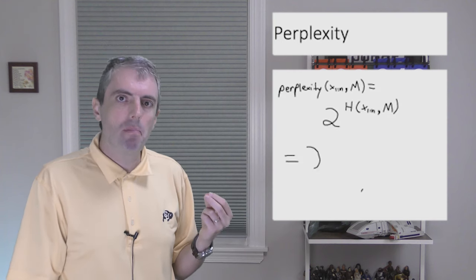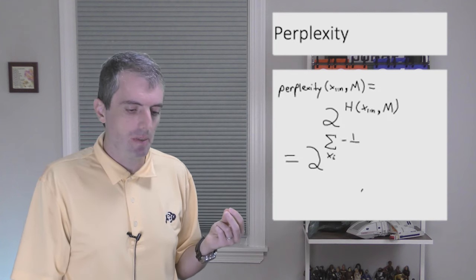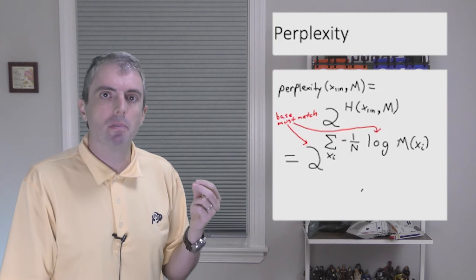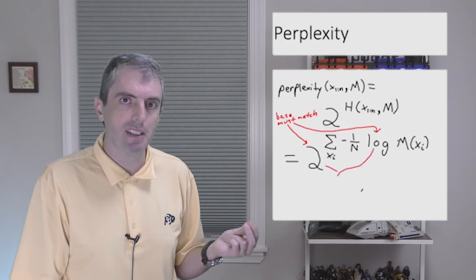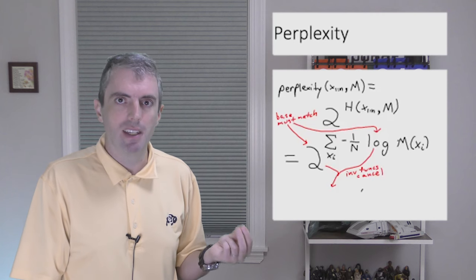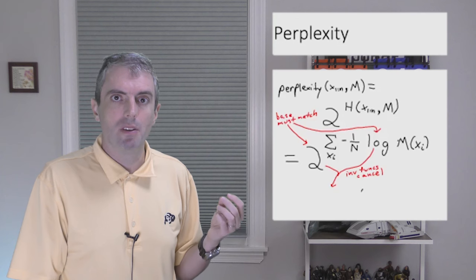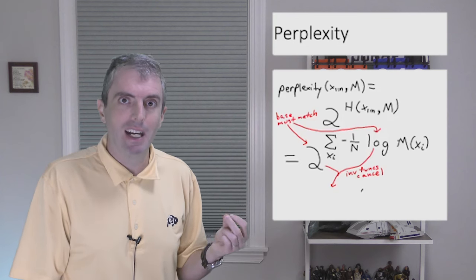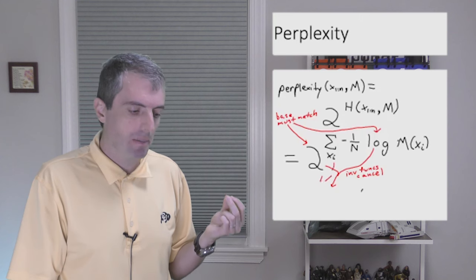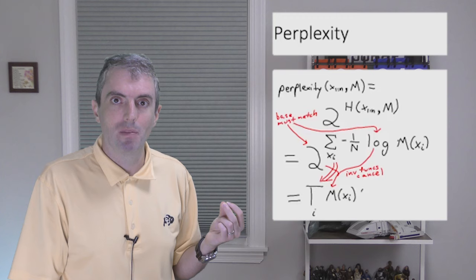When you expand it out, the base between the exponent and the log have to match. And when it does, you can use a product property of the log to get a product of the probability of each of the things raised to the negative 1 over n power, which you can simplify as the geometric mean of the reciprocal of each of the individual probabilities.